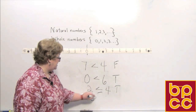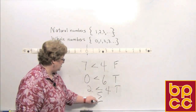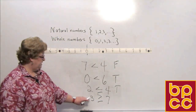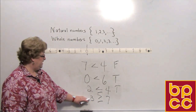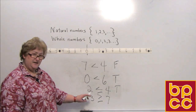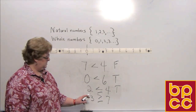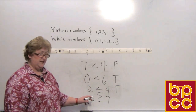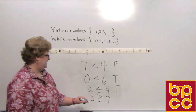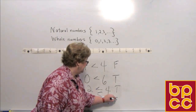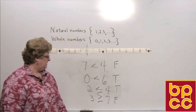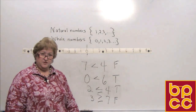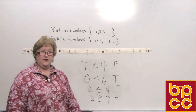Let's try: three is greater than or equal to seven. Is any part of that true? Three is not greater than seven, and three is not equal to seven, so this is a false statement. That will pretty much cover whole numbers, natural numbers, and some mathematical equalities and inequalities.